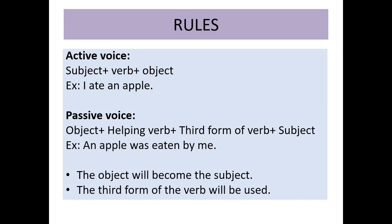Let's understand what the rules are in active and passive voice. If there is any sentence in active voice, it will be in three parts: first, subject; then verb; and object. In that sentence there are three parts — subject, verb, and object.